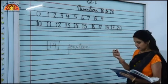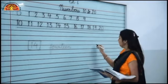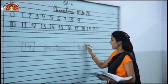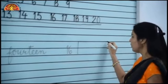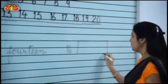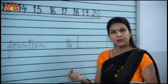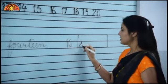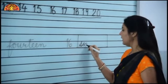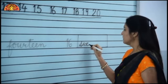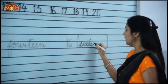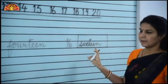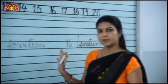Let's see another question. 1, 6 — 16 is written here. Now you have to write the number name of this number. What is the spelling of 16? We will write that spelling: S-I-X-T-E-E-N, 16. This is the spelling of 16. I hope you have understood.